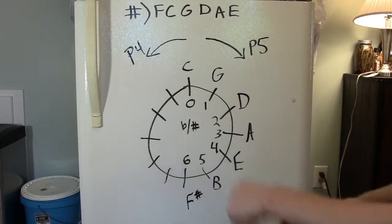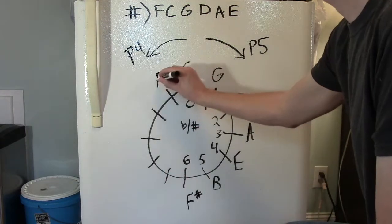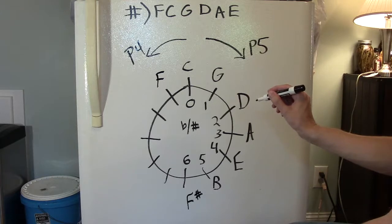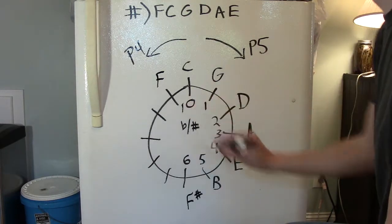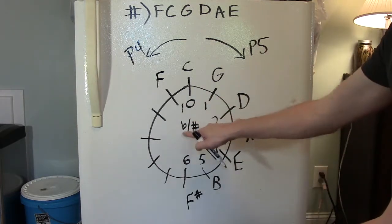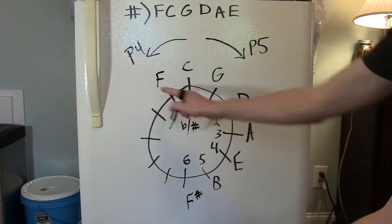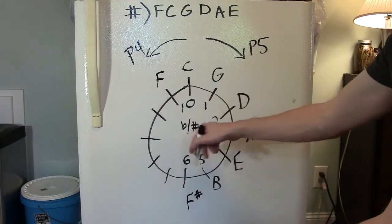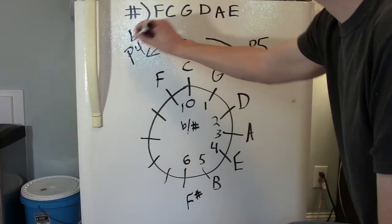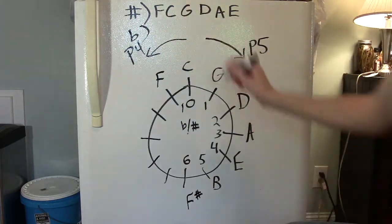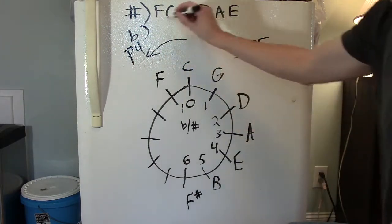You know what note that is? We are at F major. We have arrived at our very first key using flats instead of sharps. The key of F major has one flat in it, and we better write these down. Our first flat is going to be B flat.